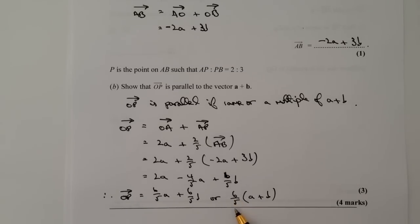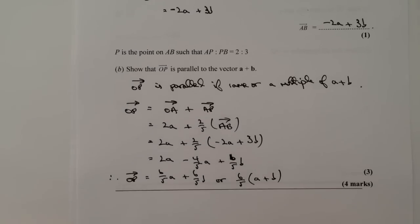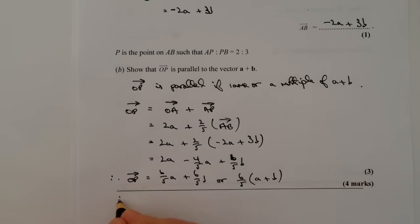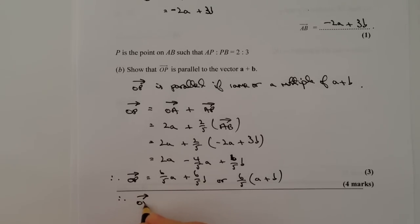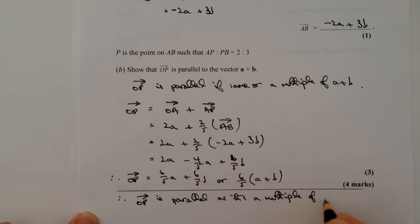If you prefer to work in decimals, then six fifths would be the same as working at 1.2. And I would generally, to answer these questions, I would put a line in that says vector OP is parallel as it's a multiple of a plus b. OK. I hope that's OK for you. It is a bit of a tricky video. And please do add a comment below. Let me know what you think. And I'll look forward to seeing you inside the next video.